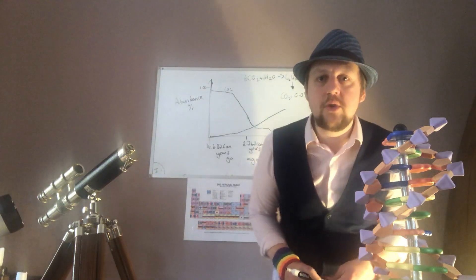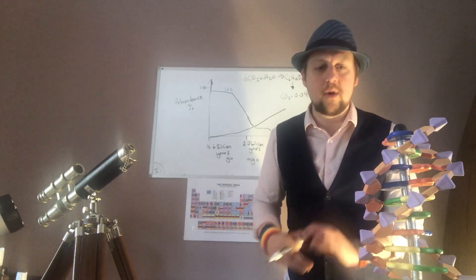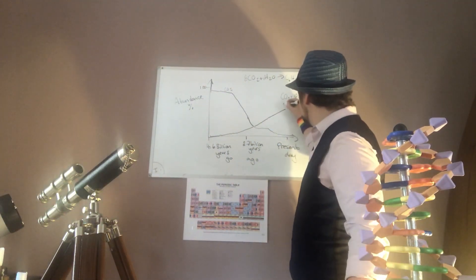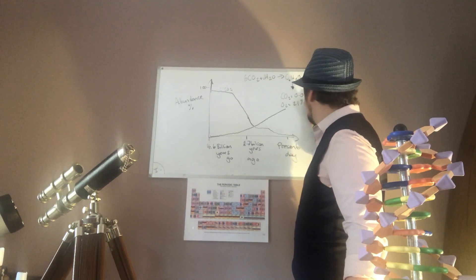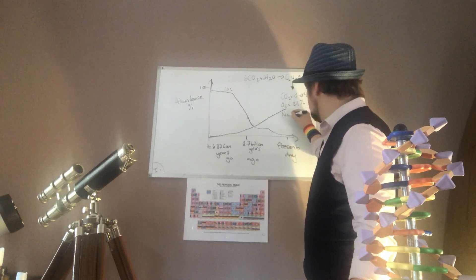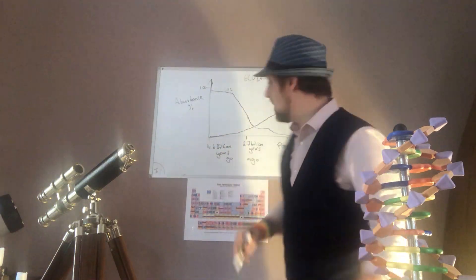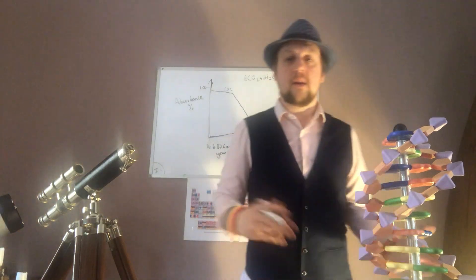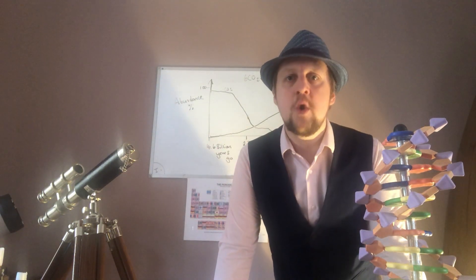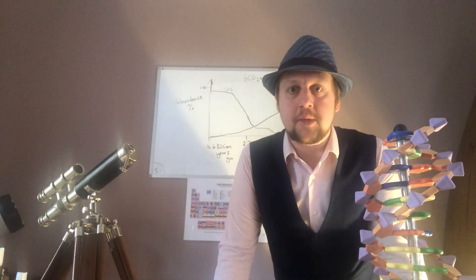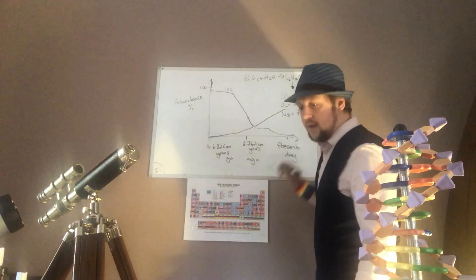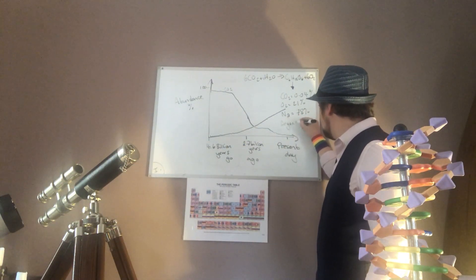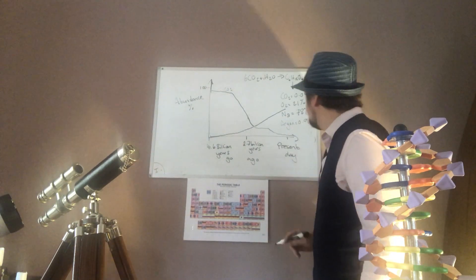Oxygen levels - people always get this one wrong - oxygen is about 21%. People usually think it's a lot higher. Nitrogen is 78%, so in this room right now, it's 78% nitrogen that I am breathing in through respiration.